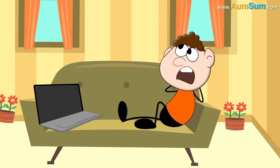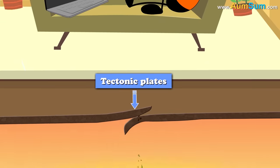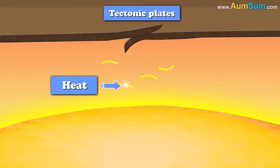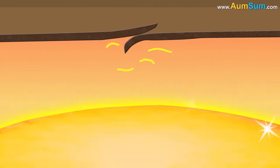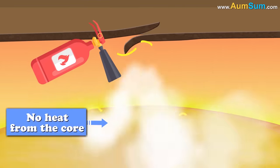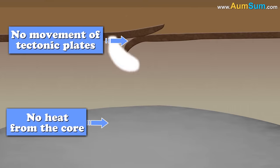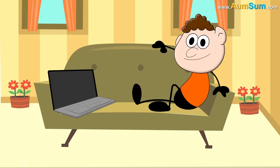Also, earthquakes occur when tectonic plates rub against each other. These plates move because of the intense heat coming from the core. Now, no heat from the core means no movement of tectonic plates. Thus, no earthquakes.